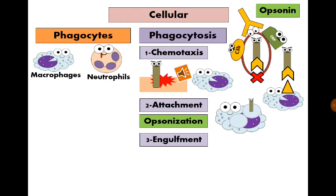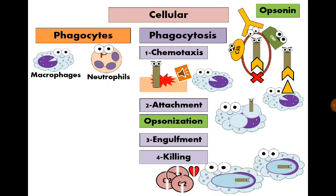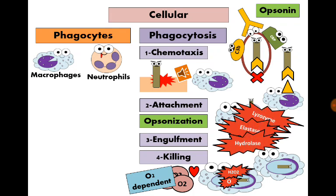The third step is engulfment: the organism is internalized inside a vacuole in the macrophage called the phagosome. The phagosome then fuses with a bag of enzymes called the lysosome, forming the phagolysosome. The last step is killing, either through production of active oxygen radicals like H2O2 and singlet oxygen — the O2-dependent mechanism — or through lysozyme, elastase, and hydrolase enzymes — the O2-independent mechanism.